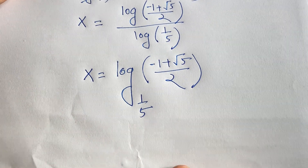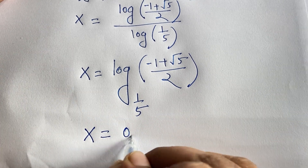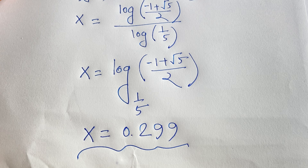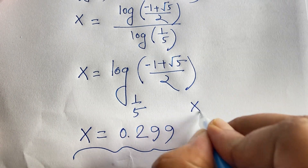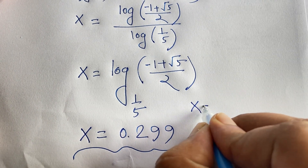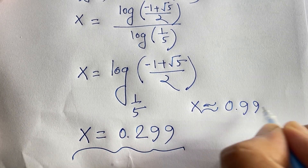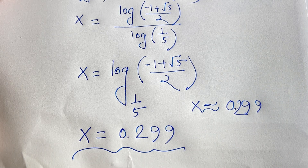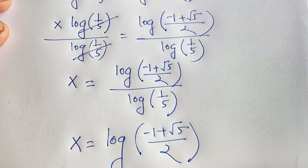Using a calculator, we find x is equal to 0.299. This is our final answer for this math olympiad question. Thank you all — if you enjoyed this video, please subscribe to my channel for more interesting videos. Goodbye, take care.